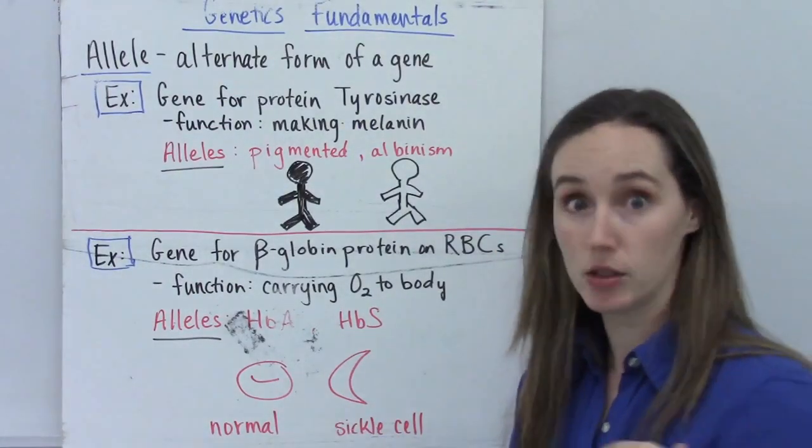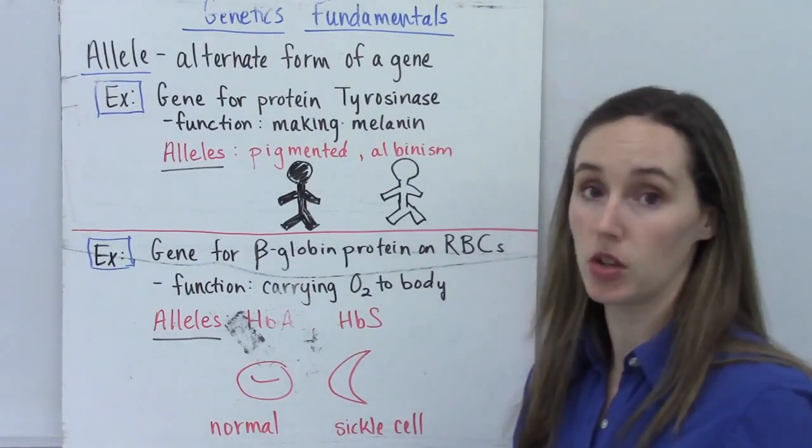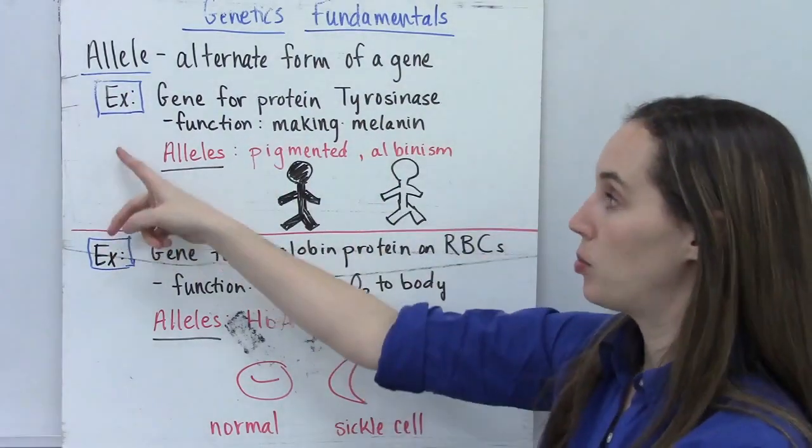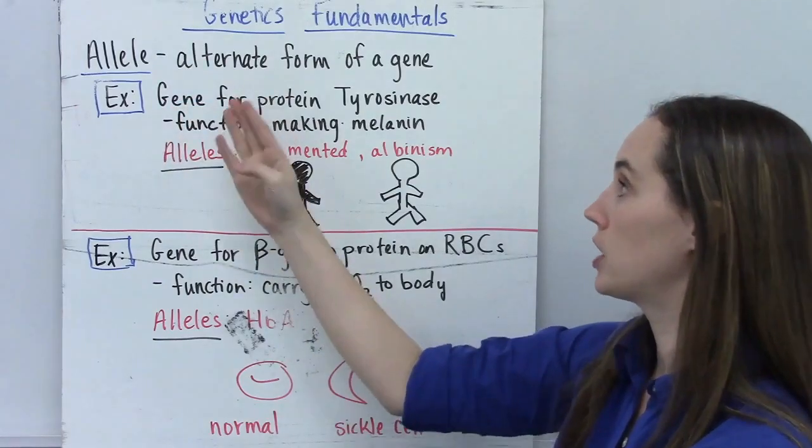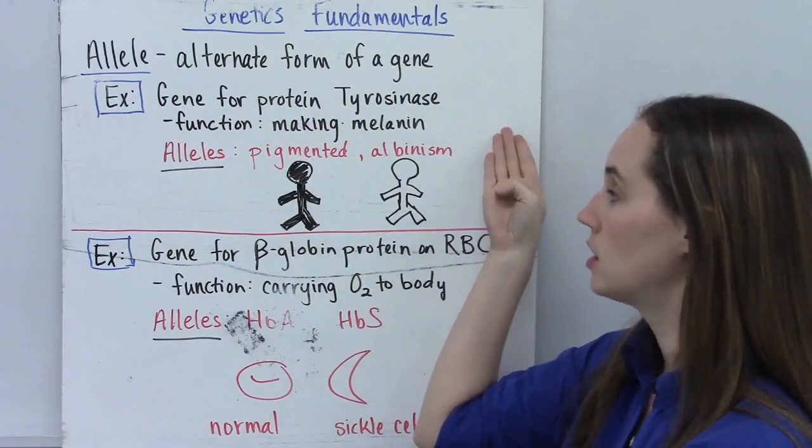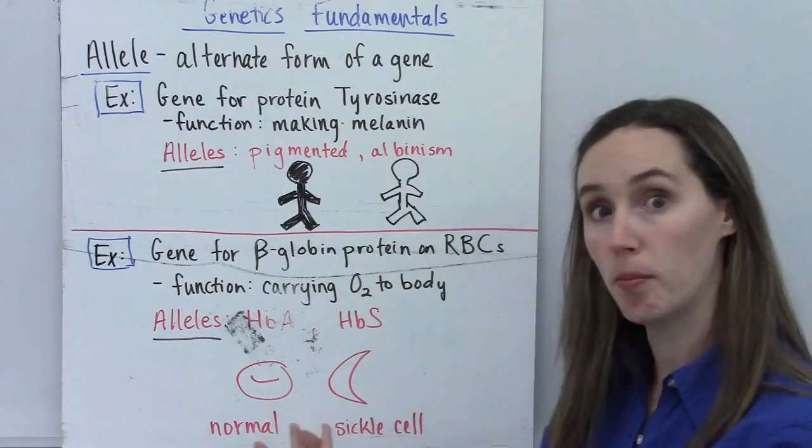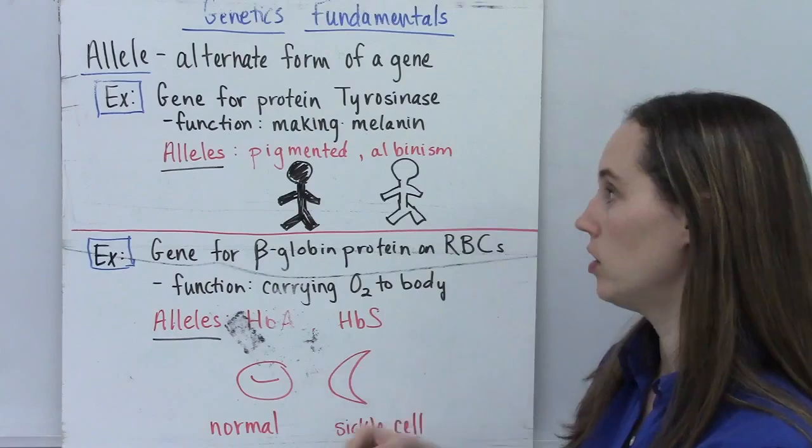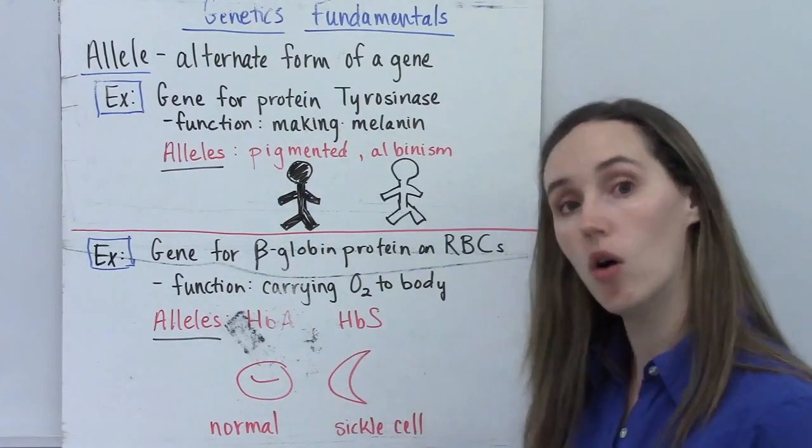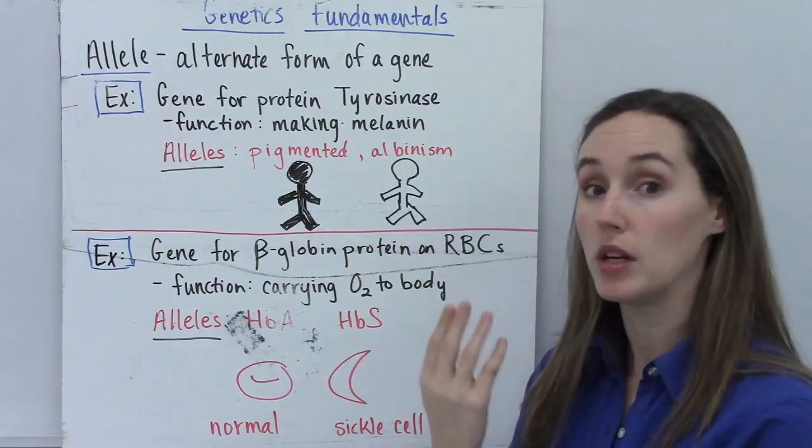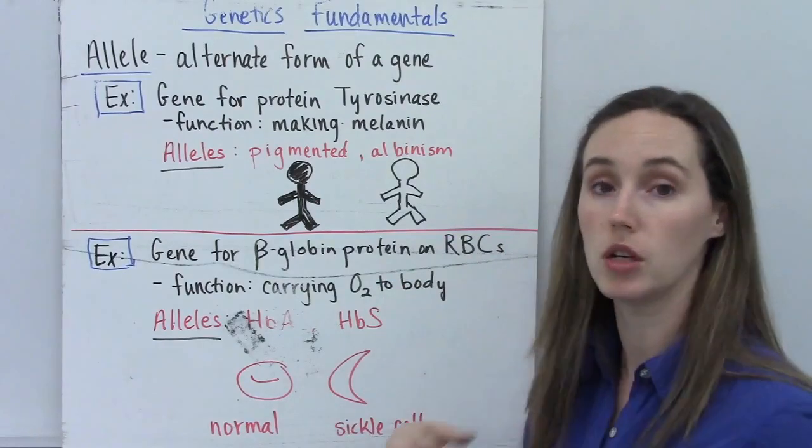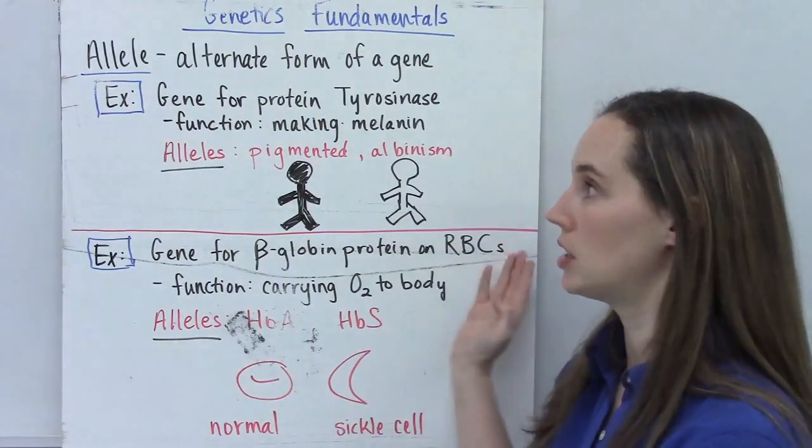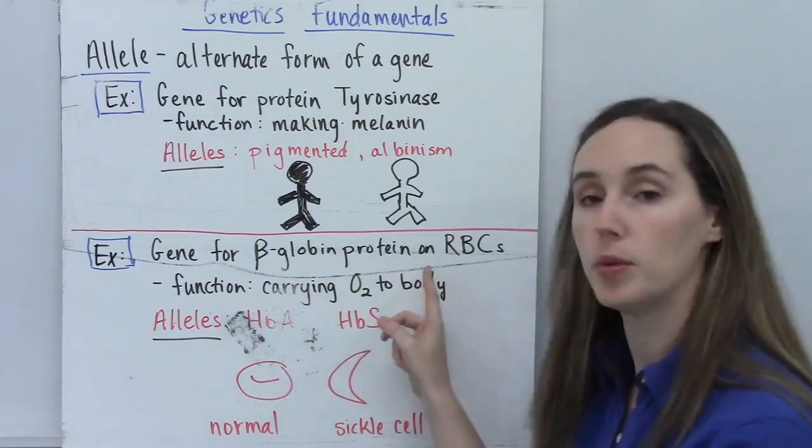Genes come in many forms and that's why we don't all look alike. Different forms of genes are called alleles. Alleles are just alternate forms of a gene. So an example: we have the gene, there's a gene that codes for the production of a protein called tyrosinase, and its function is to make the brown pigment molecule melanin in your skin. The different alleles for this protein are the allele that will give you pigmented skin, or the allele that if it doesn't function will result in albinism, which means you don't make pigment in your skin or hair or eyes.